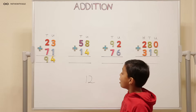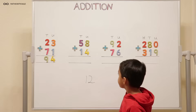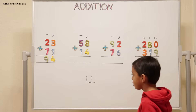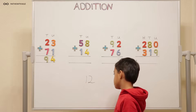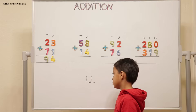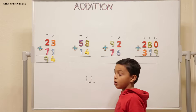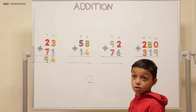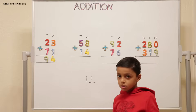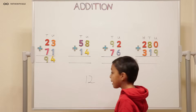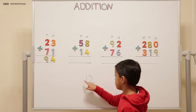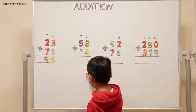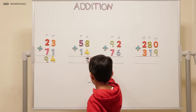Why? The eight and the four come under what column? The units? Yes, the units. And in the number twelve, can you tell me the value of the one and the two? One ten and two units. So the tens has to go in the tens column and the units has to go in the units column. So what do we put in the units column? Just a two here.